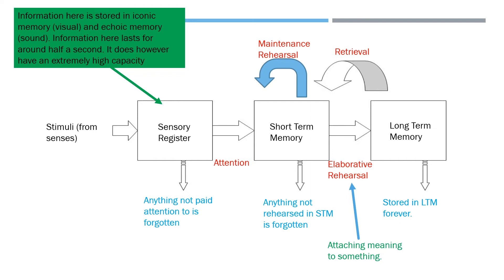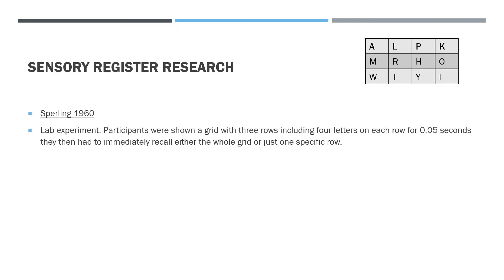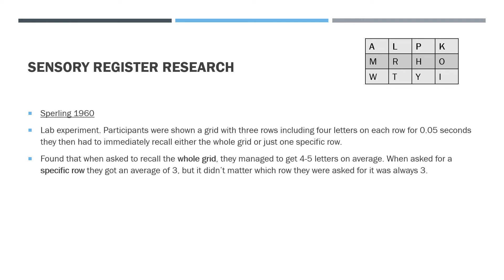The sensory register study is by Sperling in 1960 — it's a lab experiment. Participants were shown a grid with three rows of four letters for 0.05 seconds, then had to immediately recall either the entire grid or just one specific row. They knew which row to recall because of the pitch of a noise: high-pitched meant the top row, middle pitch meant the middle row, and low-pitched meant the bottom row, and they were told this beforehand. They found that when asked to recall the whole grid, they might forget about four to five letters on average. But when asked to recall a specific row, they got an average of three — and it didn't matter which row, it was always three.